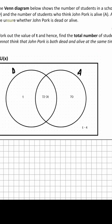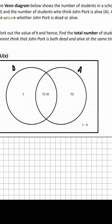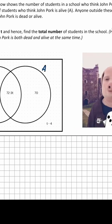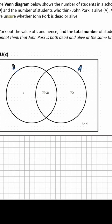The Venn diagram below shows the number of students at a school who think John Pork is dead, represented by D, and the number of students who think John Pork is alive, A. Anyone outside these two sets are unsure whether John Pork is dead or alive, so that's T minus 4 here.